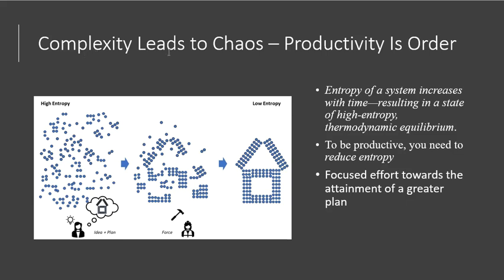First of all, complexity leads to chaos, but productivity is order. So as a builder, you need to reduce entropy — going from a state of high entropy to a state of low entropy in order to build something.